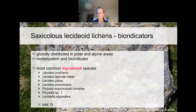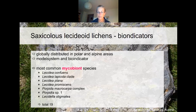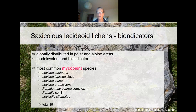In our study area, altogether 19 mycobiont species were identified, and the most common ones were species of the genera Lecidea, Porpidia, and Lecidella. For the photobionts, altogether 11 Trebouxia and 8 Asterochloris OTUs were identified. The most common OTUs were A2 from the arboricola-gigantia clade, I1 from the impressa-gelatinosa clade, and S2 from the simplex-letharia-jamesii clade.